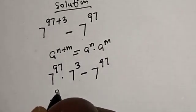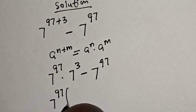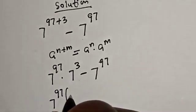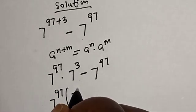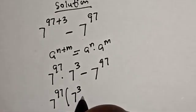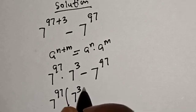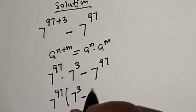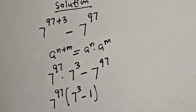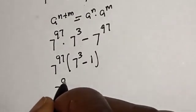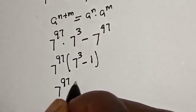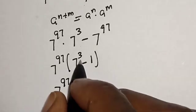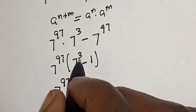Now 7 raised to power 97 is common — let's bring it out. We have 7 raised to power 97 multiplied by the quantity 7 raised to power 3 minus 1.